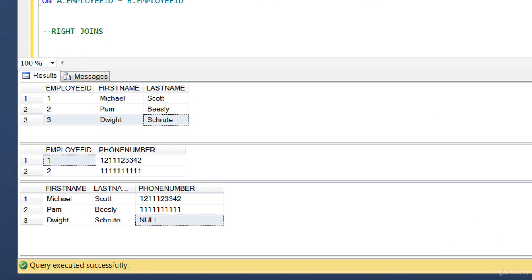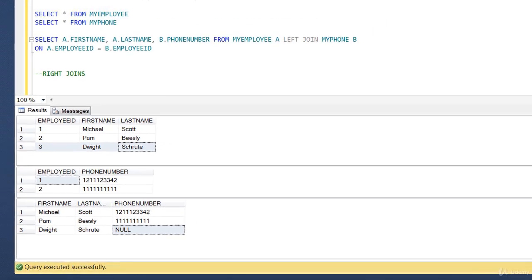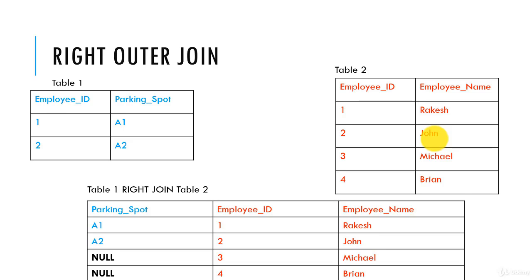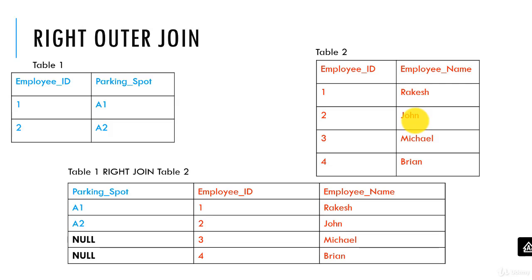The same concept applies for right join — it's kind of the opposite. Table two has four rows, table one has two rows, and both of those two rows are also in table two. When you do `table1 RIGHT JOIN table2`, it takes everything from table two. If it finds a match with table one, it fills it in; if not, it puts null in the corresponding cells.